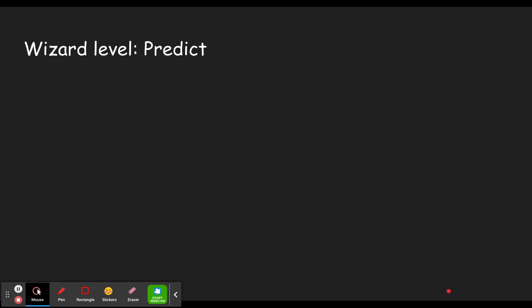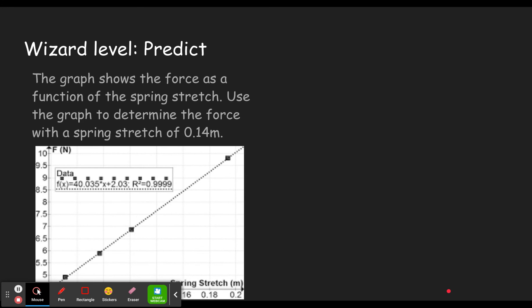All right, our final level is the wizard level, and you have to predict. This is basically just the ability to read a graph. So for example, it'll say something like this: The graph shows the force as a function of the spring stretch. So notice we got force up here and we got spring stretch there. Use the graph to determine the force with a spring stretch of 0.14 meters. So spring stretch is 0.14 meters. You go to 0.14 meters, you run that up to your line, you run across from your line over to here, and this one you get to estimate.